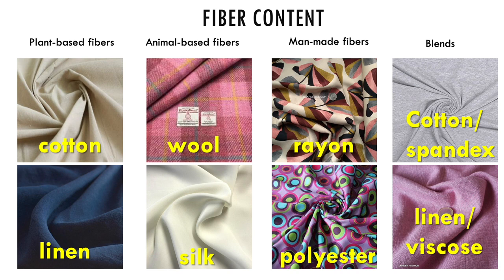Man-made fibers fall into two categories. They can be made from plant cellulose or petroleum. Plant cellulose is used to make rayon, viscose, Tencel, modal, and acetate. A chemical process is used to break down the plants into plant cellulose, then it's woven into fibers. These fabrics tend to be soft, drapey, and resistant to wrinkles. Due to their shifty, drapey nature, they can be tricky to cut and sew, but they do breathe well and are comfortable to wear.